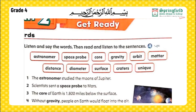Our vocabulary words are: astronomer, space probe, core, gravity, orbit, matter, distance, diameter, surface, craters, unique.